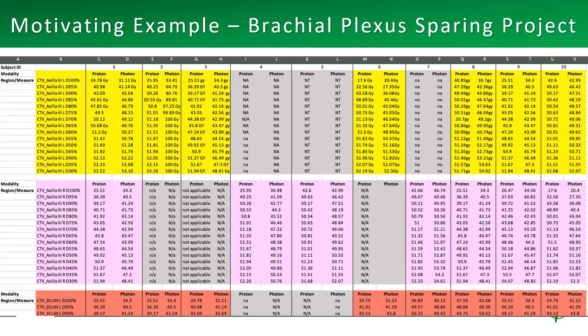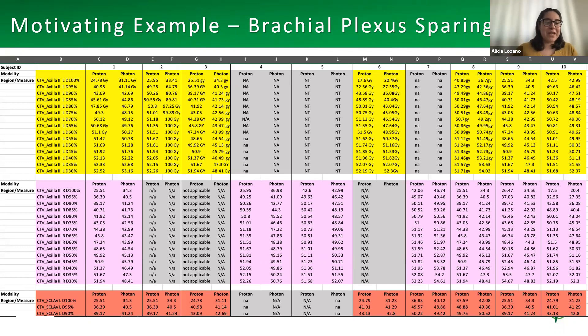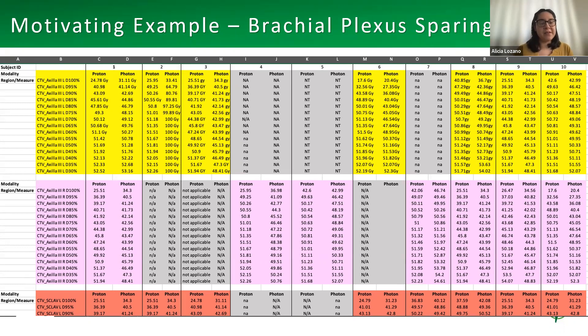Someone noted there's more than one bit of information in each cell — that's a great observation. Can you be specific about where you see that, since there are a couple of places where it happens?